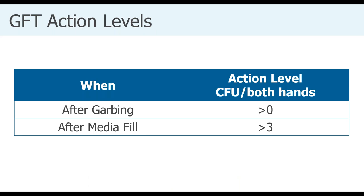Glove fingertip action levels: after hand hygiene and garbing competency, the target is zero CFU per both hands—anything greater is an action level. After the media fill test, anything greater than three CFU per both hands results in an exceeded level.